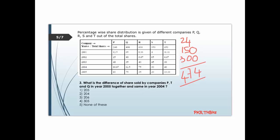For 2004, company P: 16.67 percent is 1/6, so 1/6 times 240 is 40. Company T in 2004: 40 percent of 450 is 180. Company Q in 2004: 12.5 percent is 1/8, so 1/8 times 400 is 50. Adding these gives 270 for 2004.